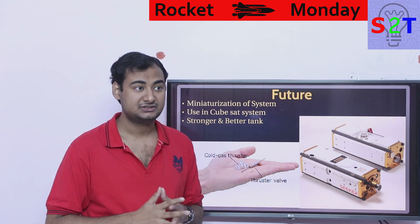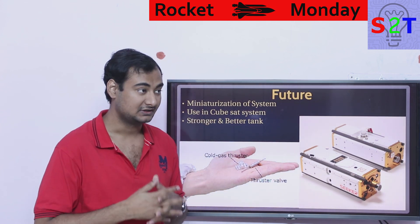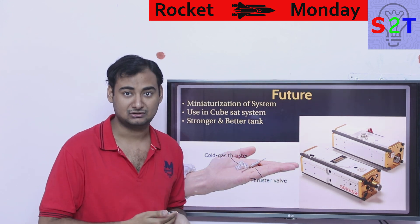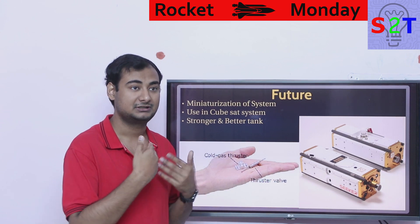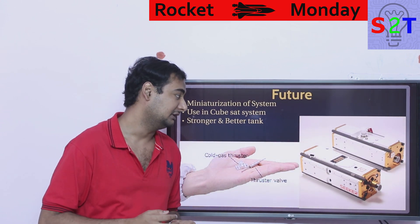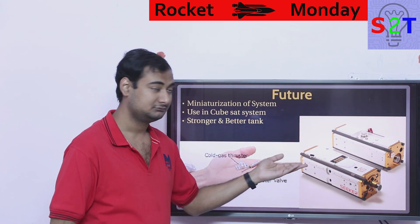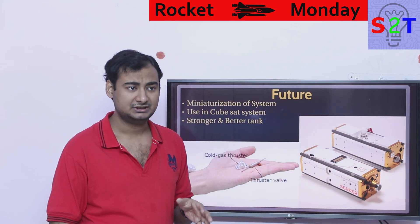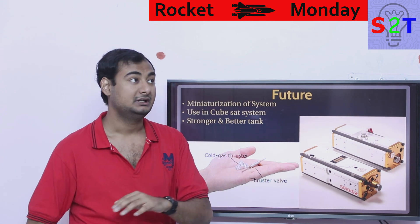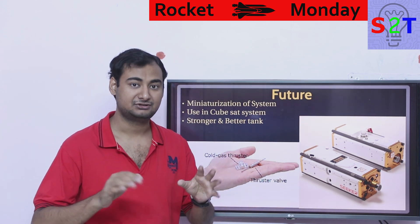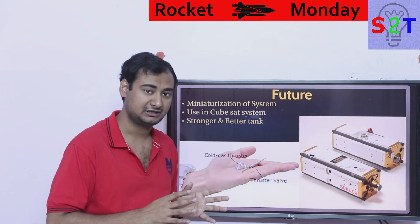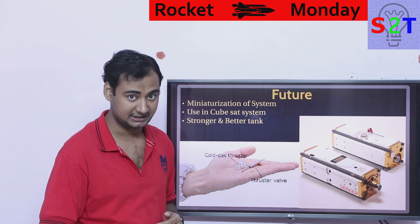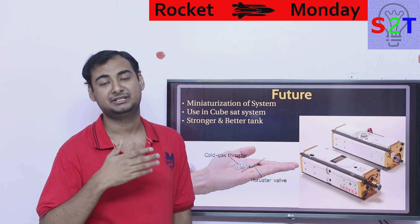Right now CubeSats are mostly use-and-throw — their equipment is functional but doesn't last long. If cold gas thrusters could be miniaturized to make a CubeSat last three to five years instead of one to two, the market would take off dramatically. There is a huge incentive to miniaturize the system.